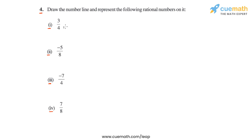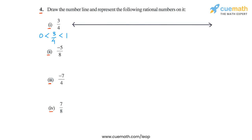Let's start with the first part in which we have to plot 3 by 4. We first observe that 3 by 4 is positive and it is less than 1, so 3 by 4 will lie between the integers 0 and 1.